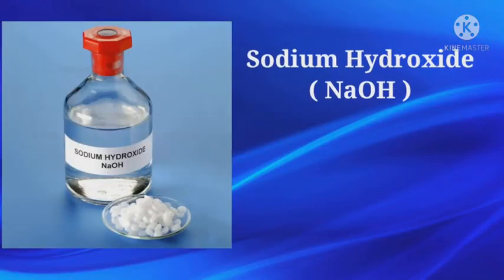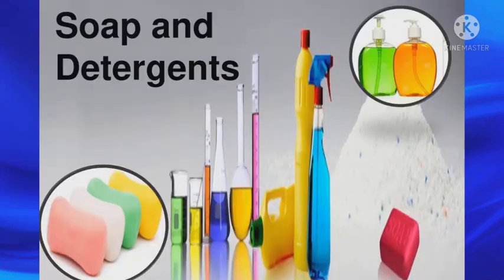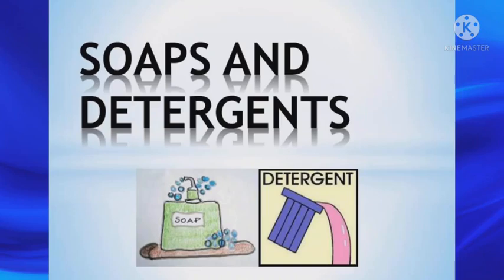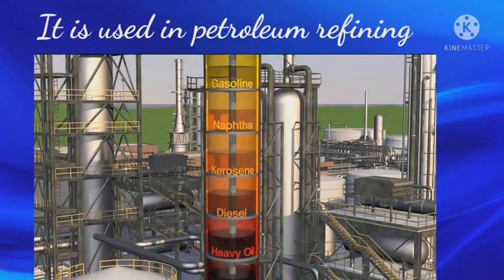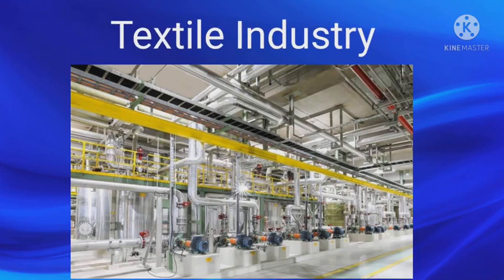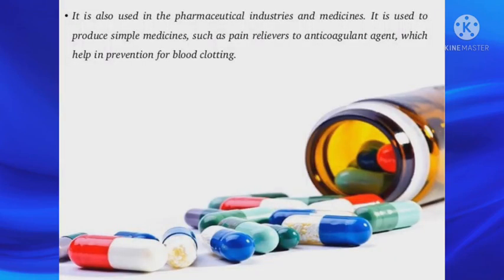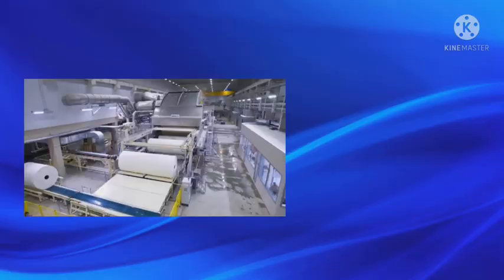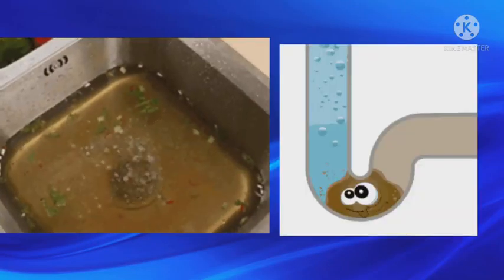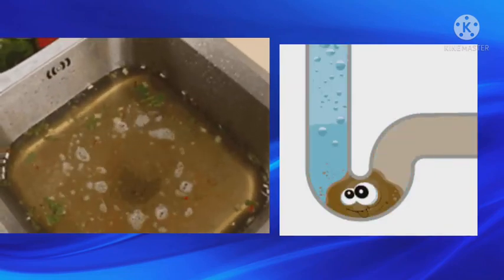Sodium hydroxide. It is commonly called caustic soda. Uses: It is widely used in manufacturing of soaps and detergents. It is used in petroleum refining and textiles. It is used in preparation of medicines, paper and pulp. At homes, it is used in unclogging drains.